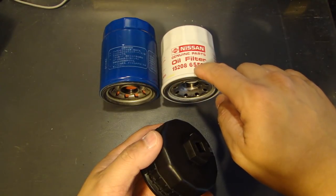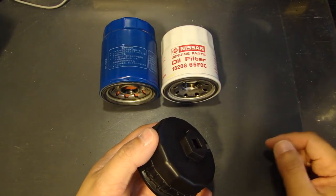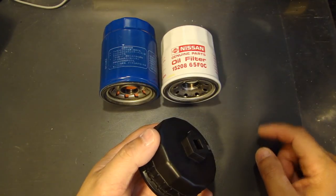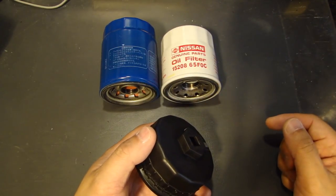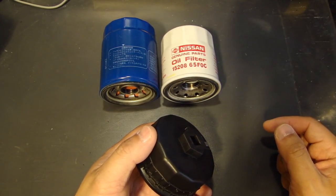And this one on the right here is a Nissan filter, 15208-65F0C. And this one is commonly used on many of the VQ 3.5 liter engines.